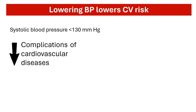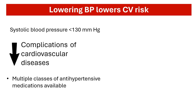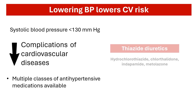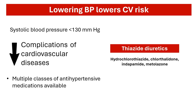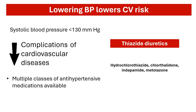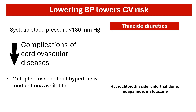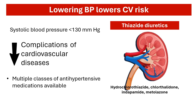There are multiple classes of medications with varying mechanisms used to reduce blood pressure. Thiazide diuretics are one of the recommended classes used as the first line for the treatment of hypertension. They act on the kidneys to increase urine production, therefore eliminating water from the body.